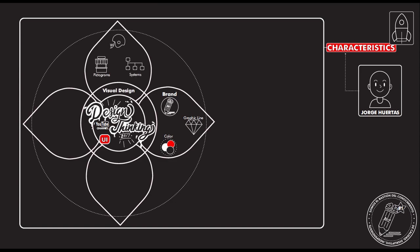The visual design is extremely important because we use pictograms. Pictograms are the synthesis of a product, service or action. All together they are combined in a system that allows you to visually understand the development you are making. The layout is extremely important because it is the distribution of all the previous components: brand, color, graphic line, pictograms and system.